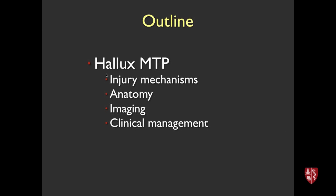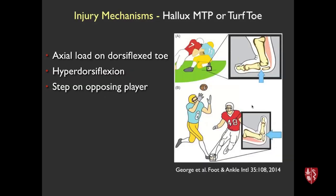This is the hallux MTP — we talk about hallux valgus and bunions all the time — but this is the first metatarsophalangeal joint. We'll look at injury mechanisms, anatomy, imaging, and a little bit of clinical management. Football players often get these injuries, and the term turf toe came up in the 1970s when the prevalence of the original artificial turf was increasing. It was a short crew-cut kind of turf, very firm with good traction, producing more friction. People associated that injury with that playing surface, though in reality it still occurs independent of it.